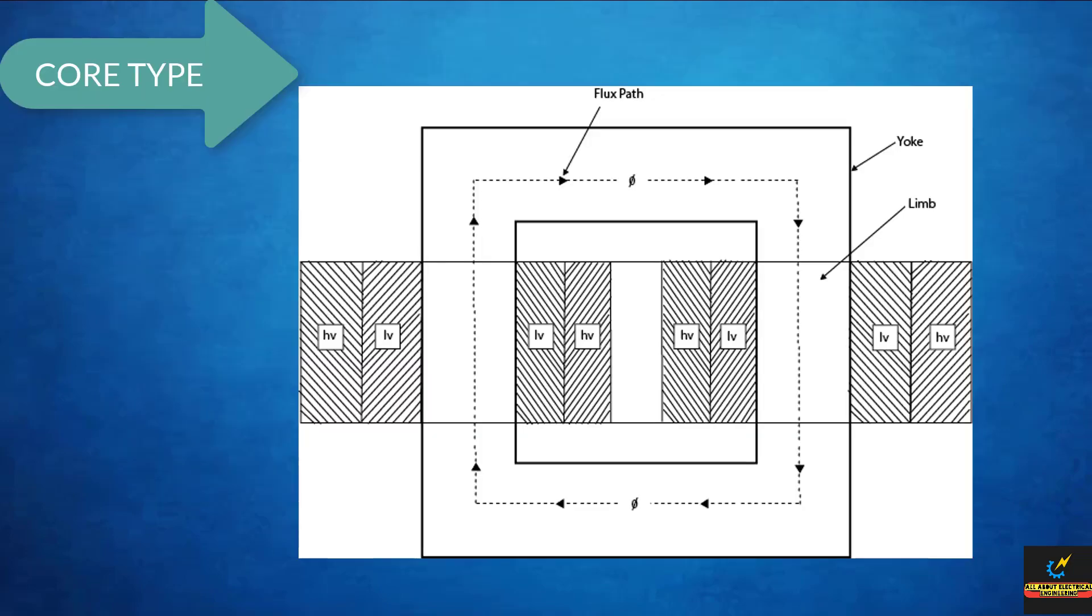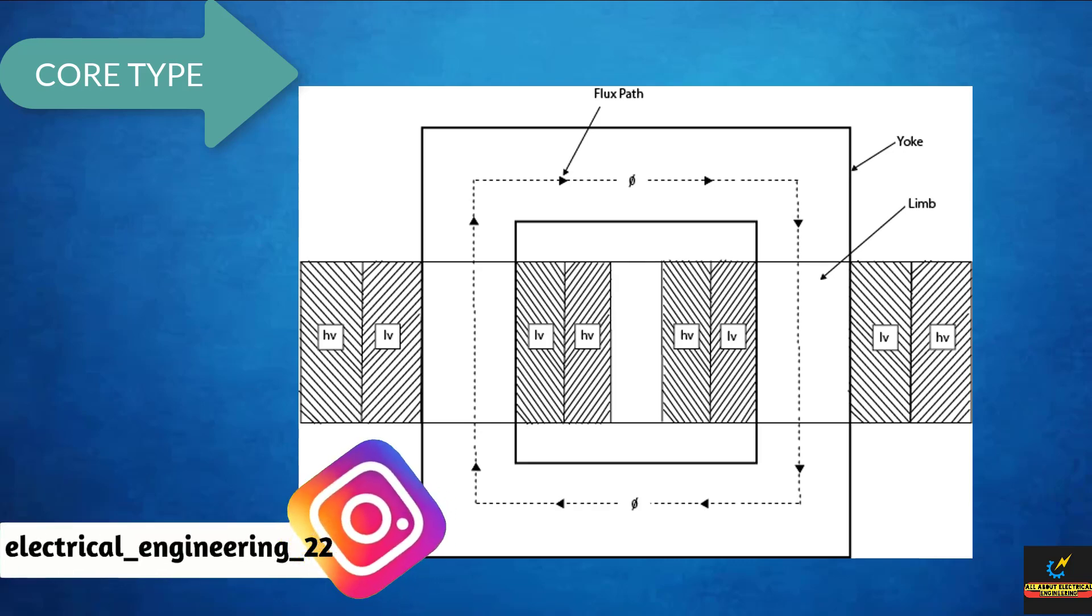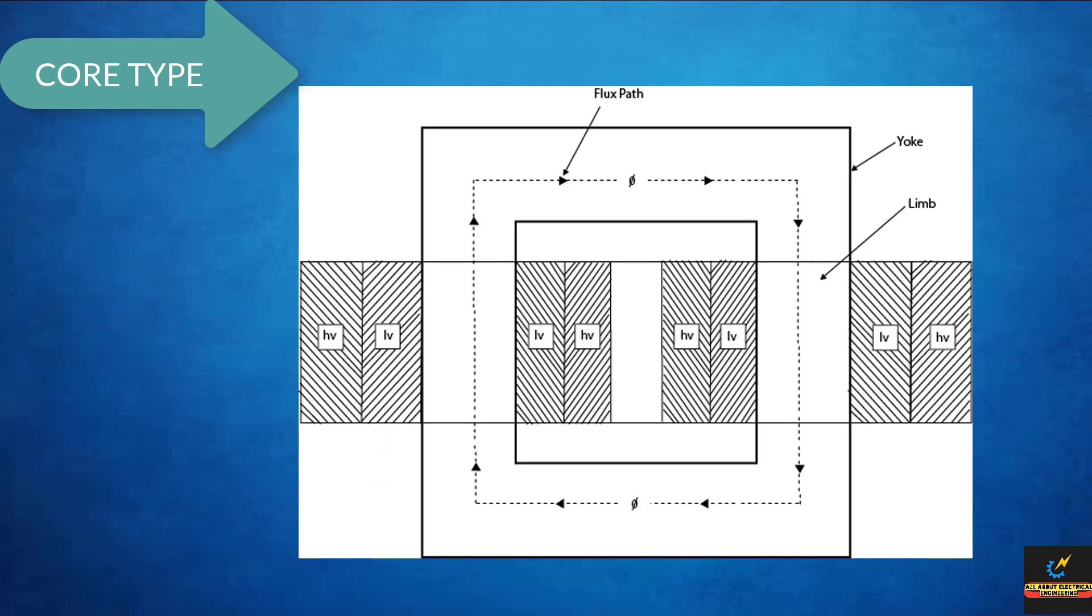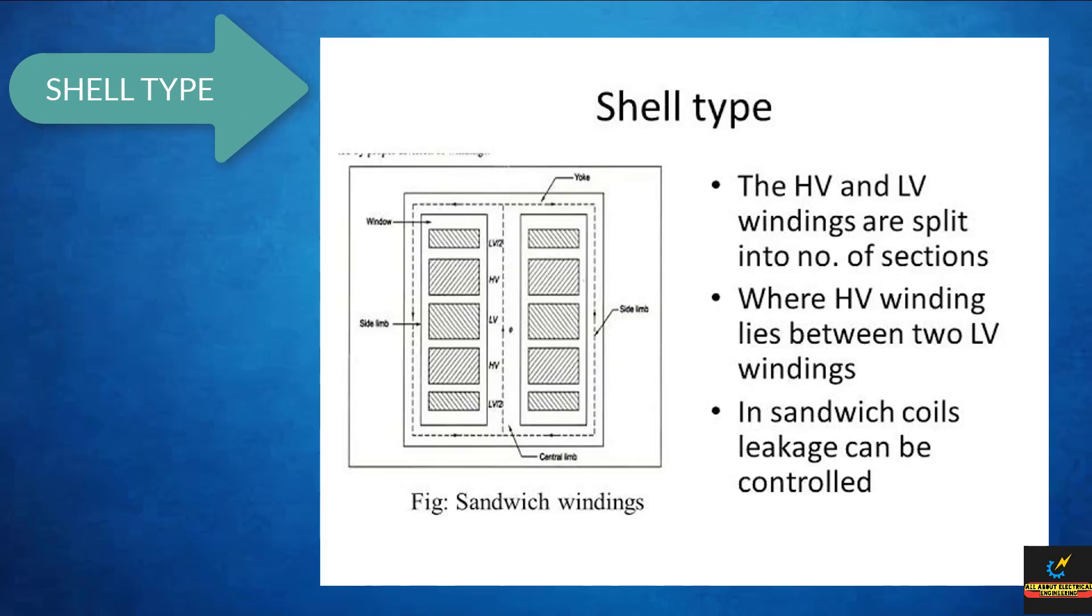For core type, half of the primary winding and half of the secondary winding are placed around each limb. This reduces the leakage flux. It is usual practice to place the low voltage winding below the high voltage winding. Both the windings are placed around the center limb.